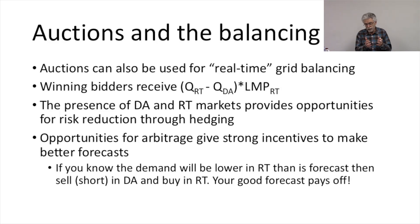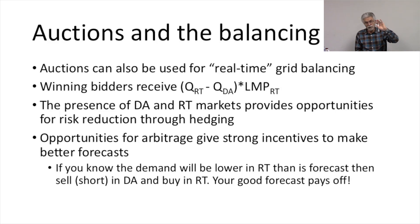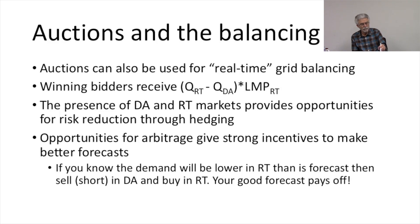There's always a difference between what we forecast yesterday and what happens today. The way to manage that can be to hold a real-time procurement auction for the difference between what was procured yesterday and what we need for today. And if we do that, auctions can be held for real-time grid balancing in fine increments during a day.